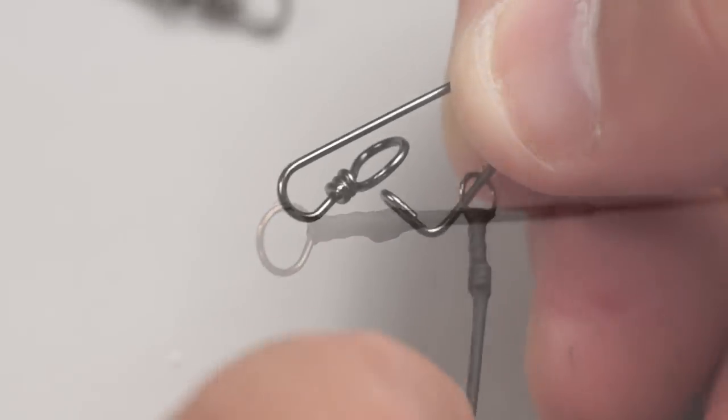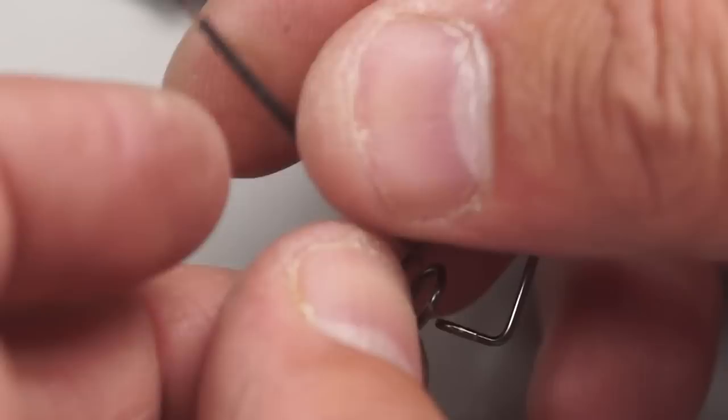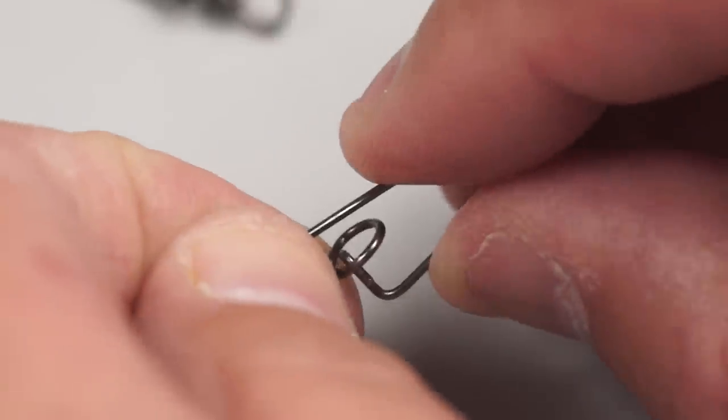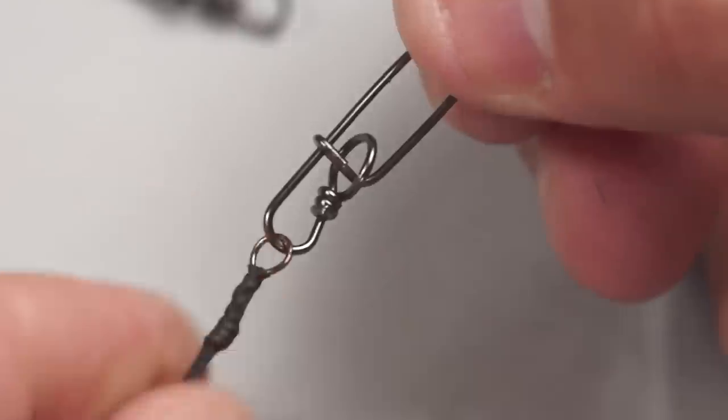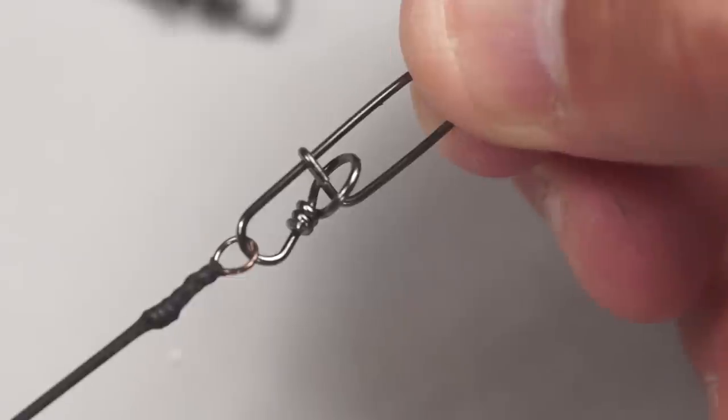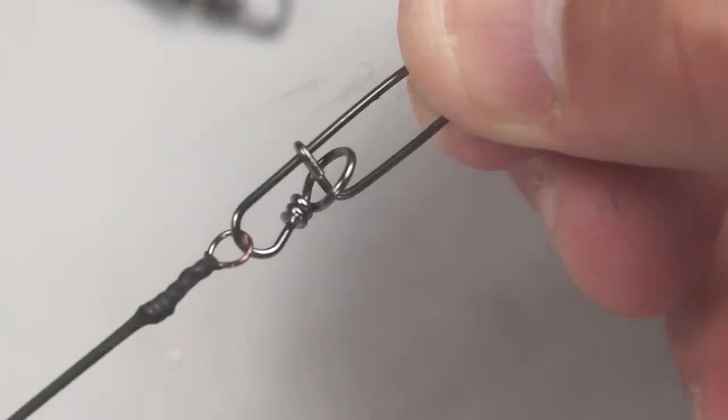To add the snap I can simply open it and pass it through the eye of the leader. Closing the snap again will make sure it keeps its position. And that's the leader complete.